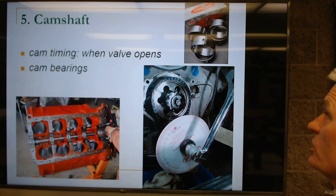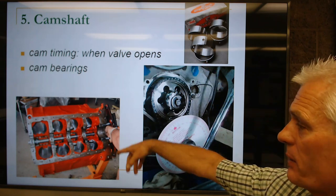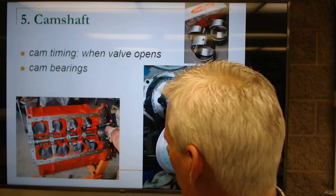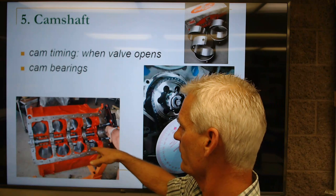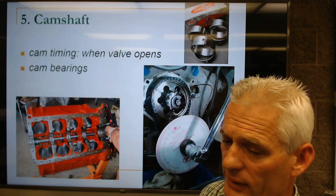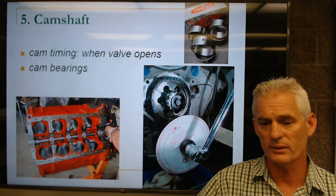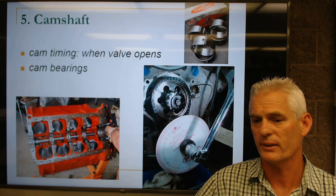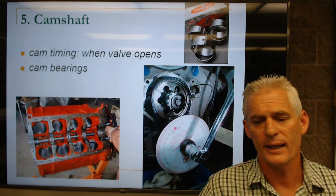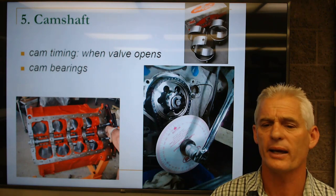Cam bearings are full circle bearings that go in a cast iron block where the cam is in the block. Here's a big block Chevy where they appear to be putting new bearings in. We do have a cam driver tool to remove and install cam bearings. Before putting the block in the hot tank, you have to remove the bearings — the cleaning solution will destroy them. Then you drive new ones in with the cam driver.